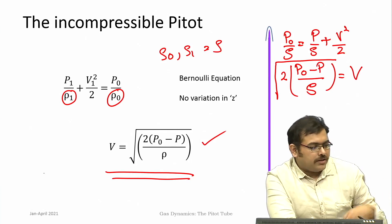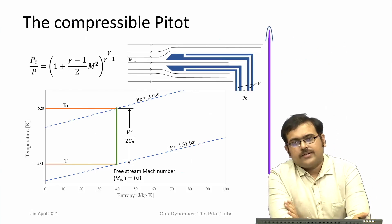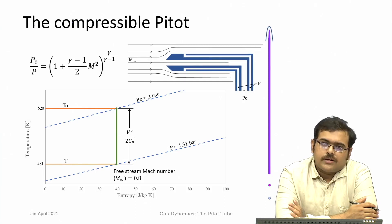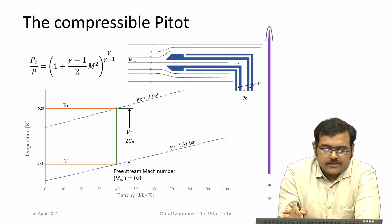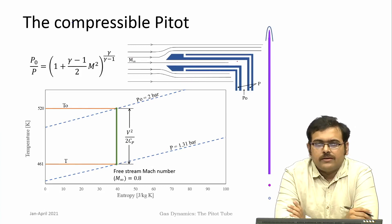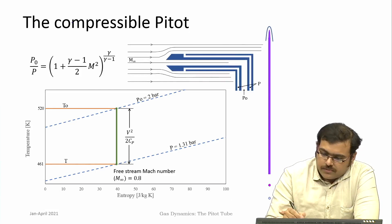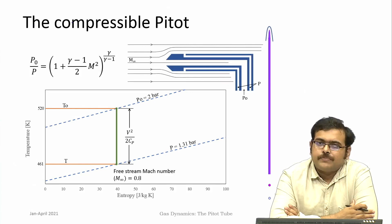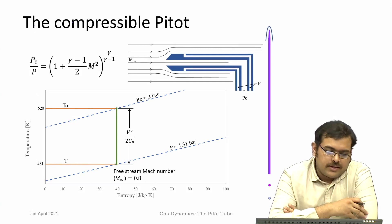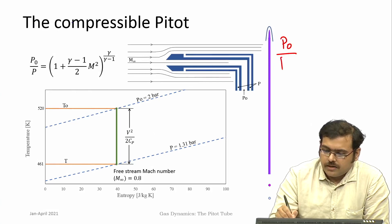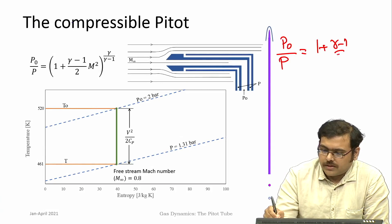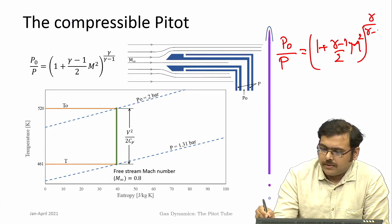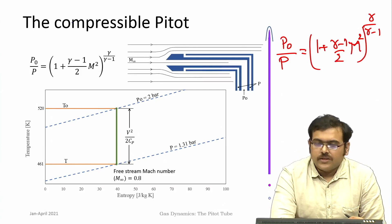One has to look at the basic definition of the process itself. The process happening within the pitot tube is a stagnation process where the flow comes in and stagnates. Once you measure both P₀ and P in a compressible flow with Mach numbers greater than 0.3, you have to use the stagnation process. Under the stagnation process for a calorically perfect gas, the relationship is P₀/P = (1 + (γ−1)/2 · M²)^(γ/(γ−1)).